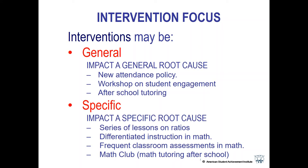On the other hand, a specific intervention will impact a specific root cause — a root cause that's specific to a subject area, a standard, or something very specific in the school that's getting in the way. Your interventions for a specific root cause are not going to impact all achievement across the board; it's only going to impact achievement related to that root cause. So if you put in a math intervention, that's not going to impact language arts. In order to raise achievement, we really need both kinds of interventions — general and specific.